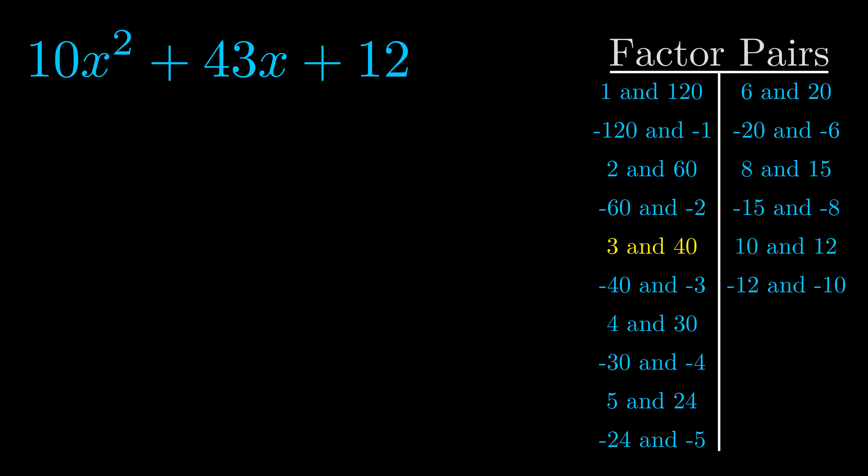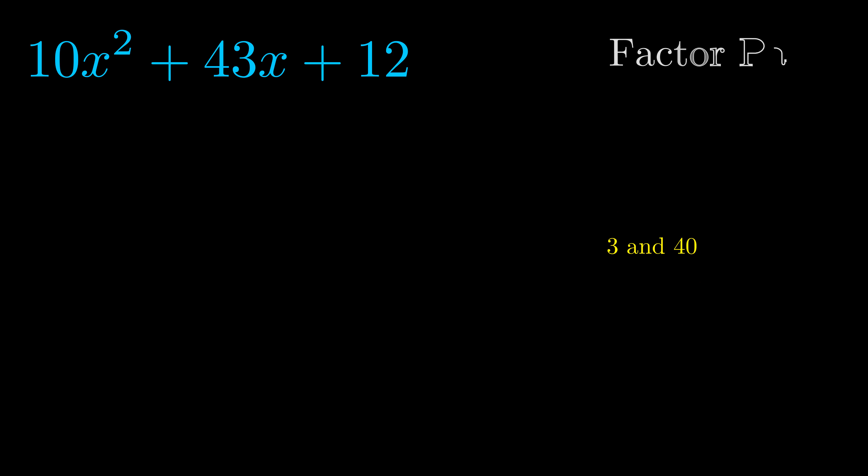And really this is the only factor pair that we need. Now once we have this factor pair what we want to do is we want to use it to split up the b value.